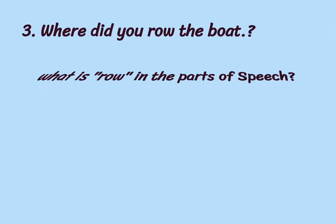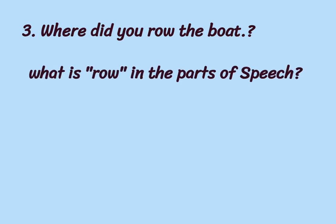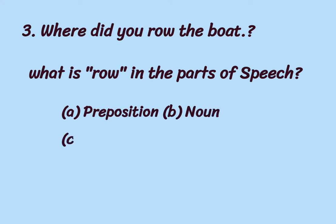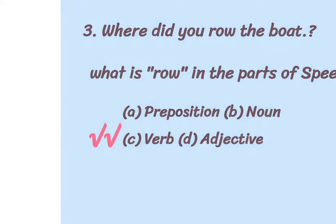The third sentence is 'Where did you row the boat?' What is 'row' in parts of speech? Option A: preposition, option B: noun, option C: verb, option D: adjective. Row is actually a verb, so the correct part of speech for 'row' is verb. Option C is right.